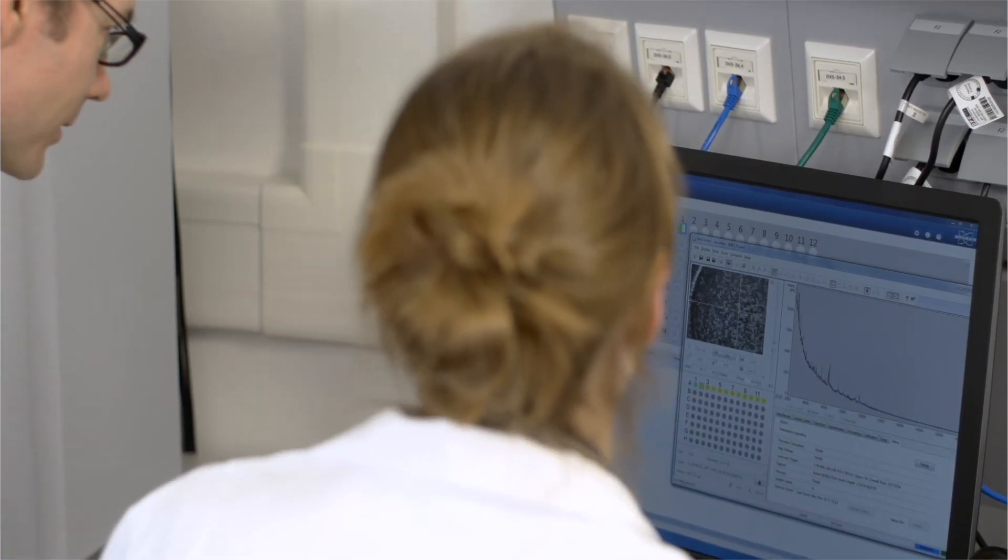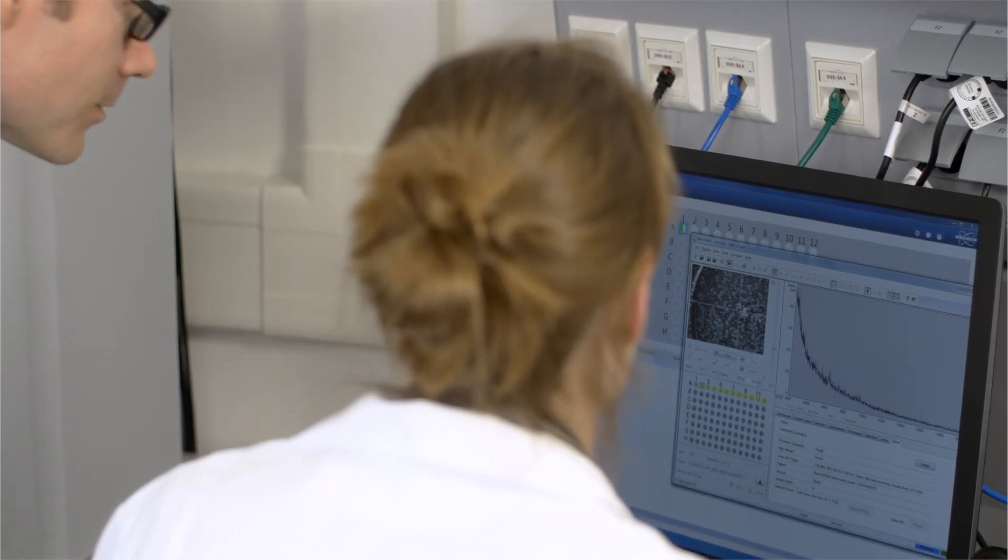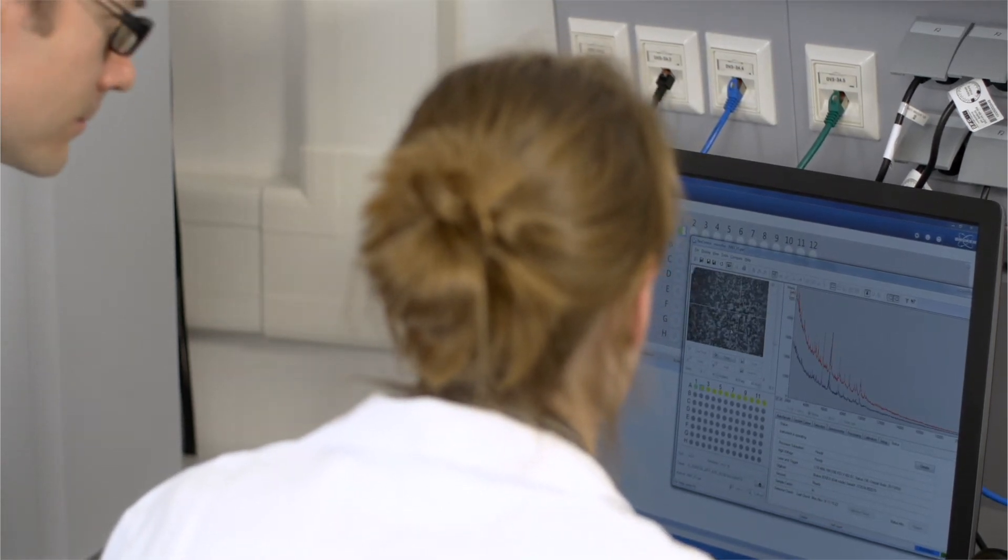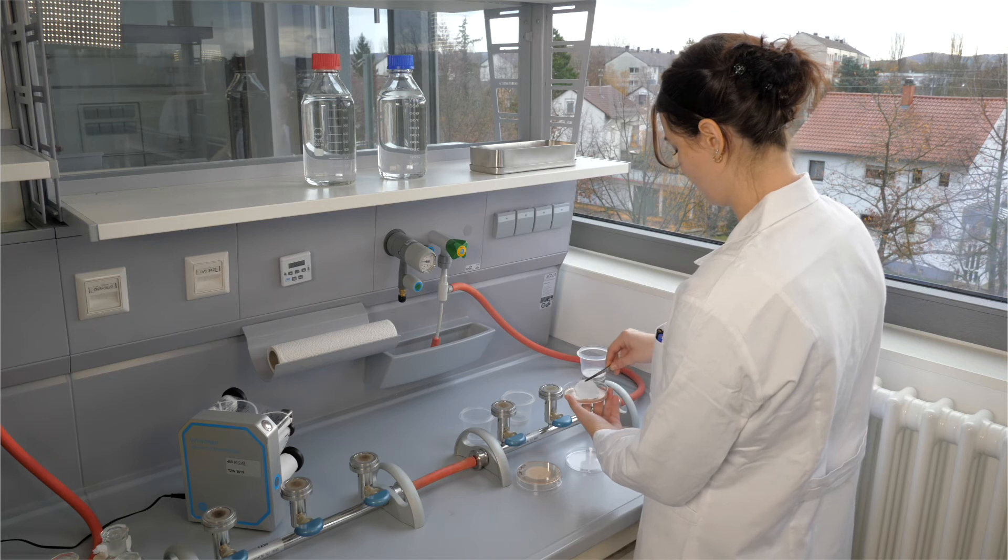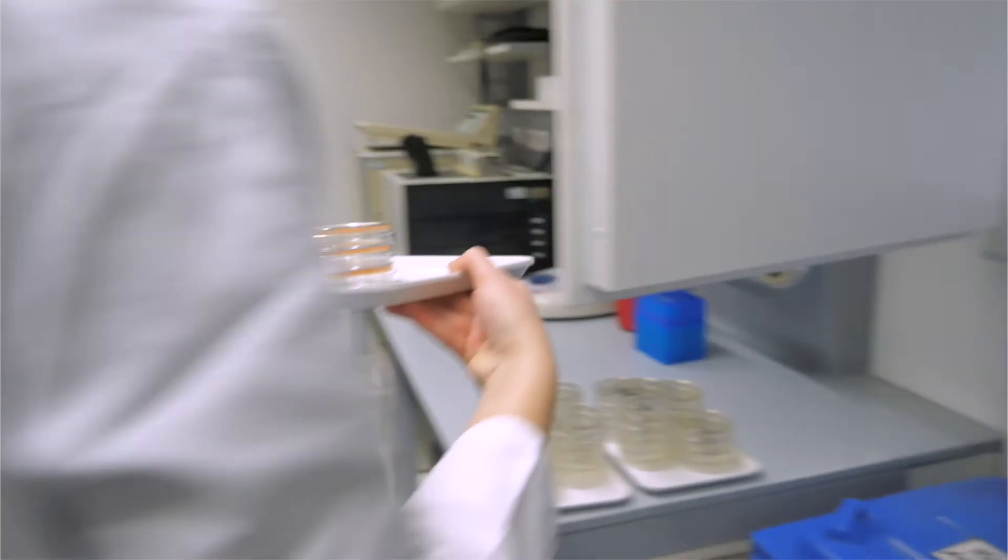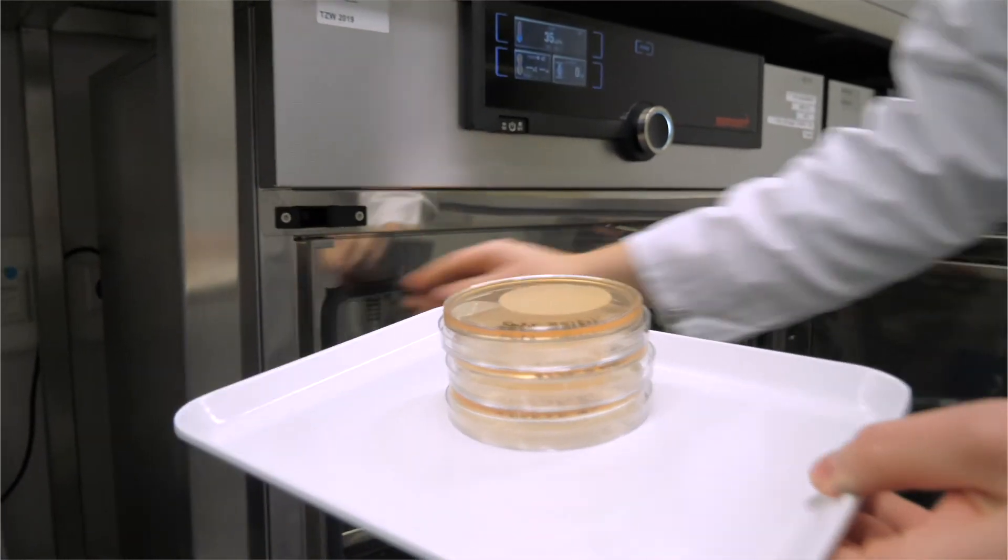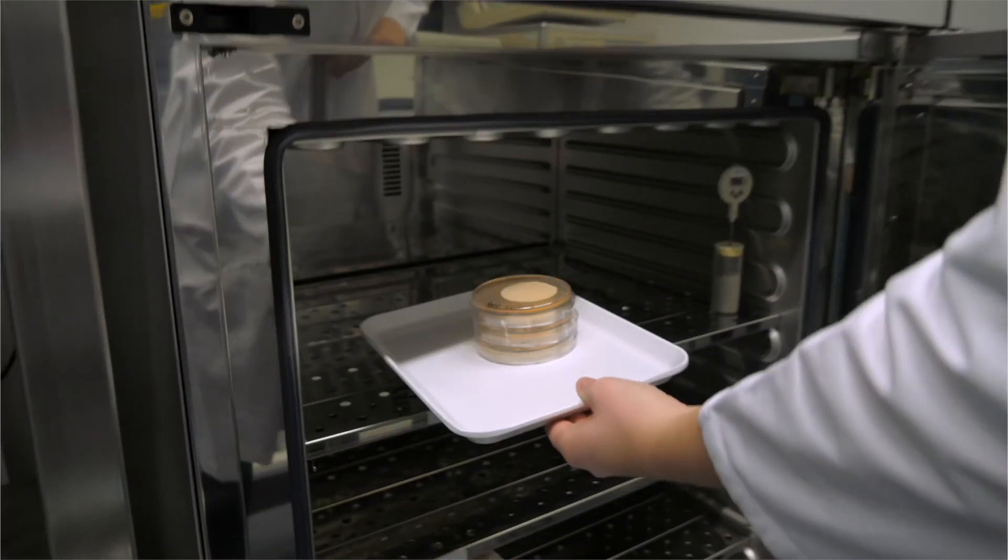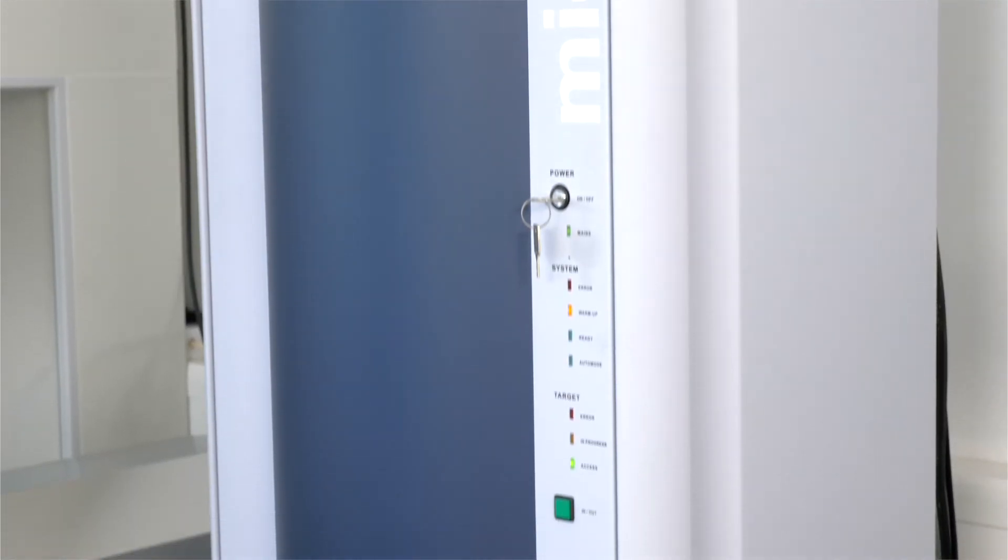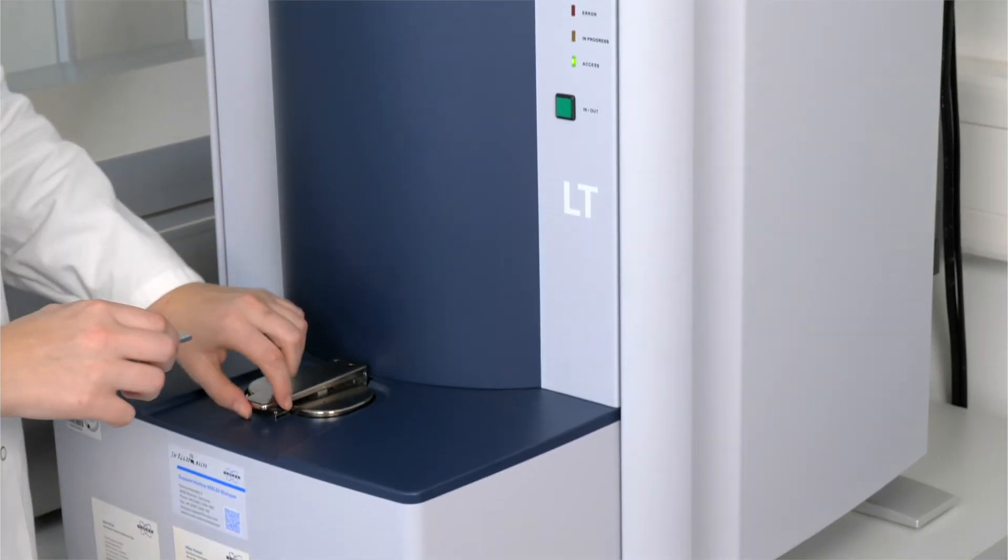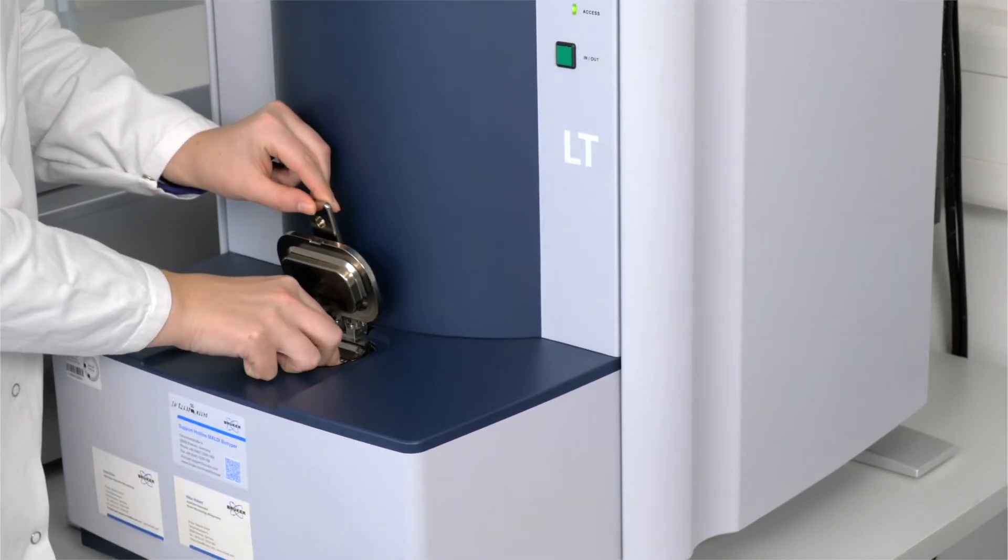The method enables the identification of bacteria isolates in less than an hour, a very short timeframe. If there are any enterococci in the water sample, bacteria colonies will grow on the filter. These colonies can then be identified directly in the MALDI-TOF mass spectrometer using the bacterial protein spectrum.